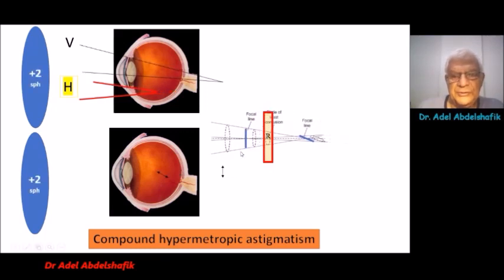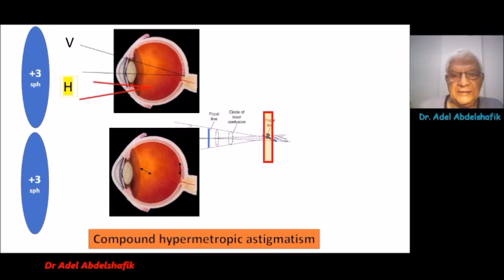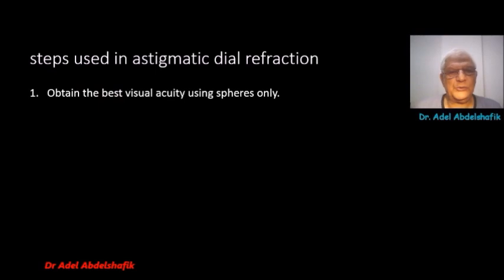Another addition, the circle of least confusion is on the retina. More addition, the second focal line is on the retina. What are the steps used in astigmatic dial refraction?